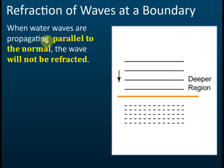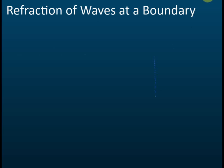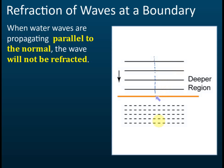The third case: if the direction of the wave is parallel to the normal, the wave is not refracted — the direction remains the same. However, the wavelength will still change. For example, moving from a deeper to a shallower region, the wavelength becomes shorter, but the direction of the wave stays the same.